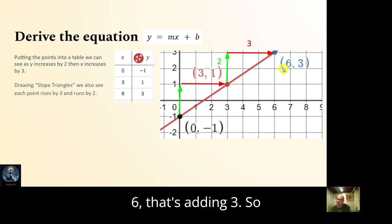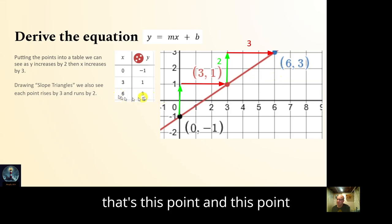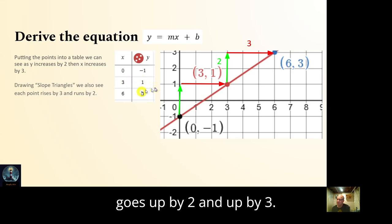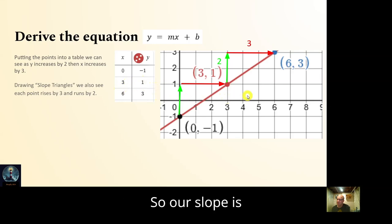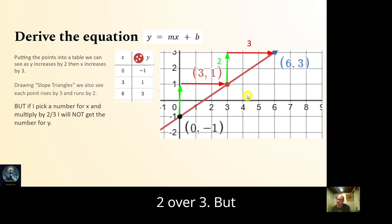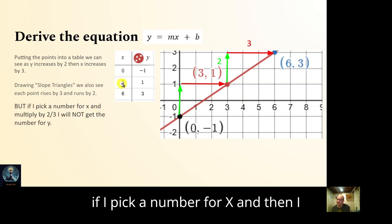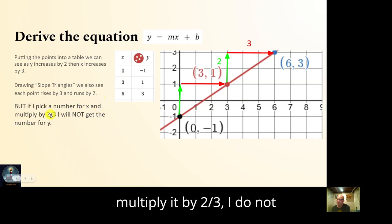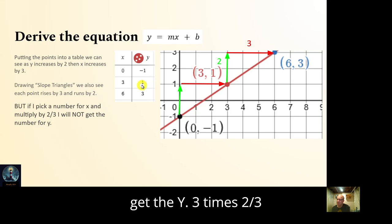As one goes to three that's adding two, and as three goes to six that's adding three — so this point and this point go up by two and over by three. Our slope is two over three. But if I pick a number for x and multiply it by two thirds, I do not get the y.